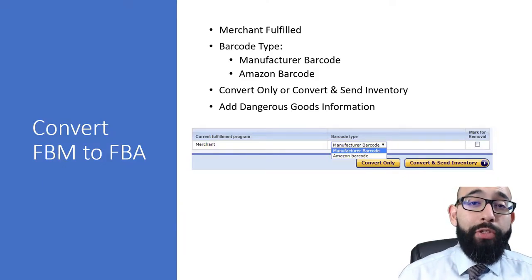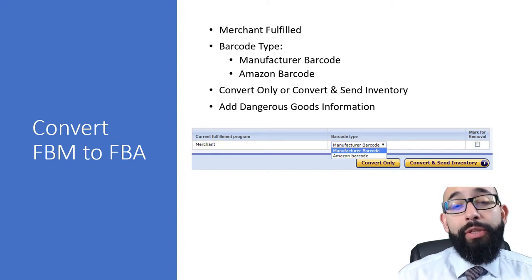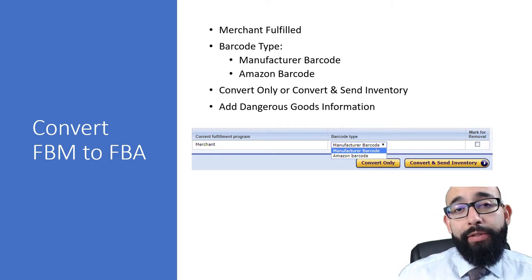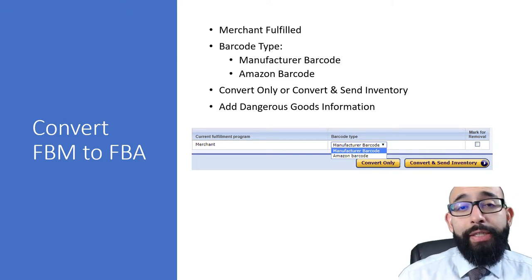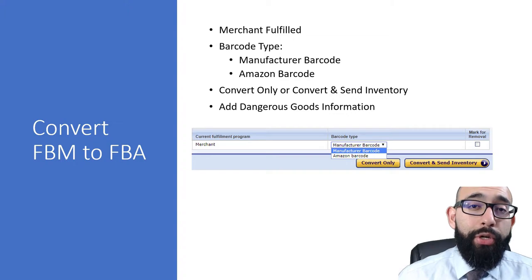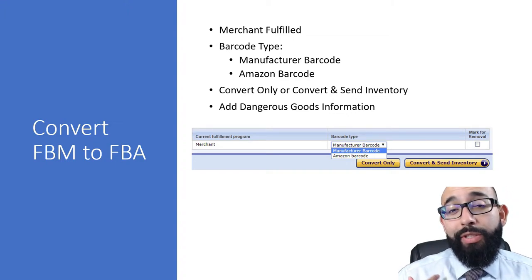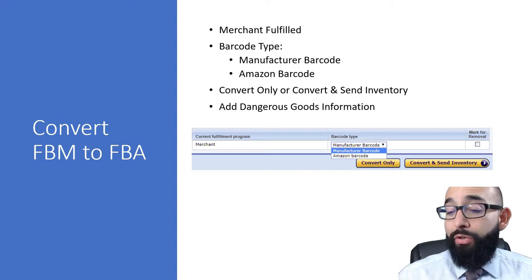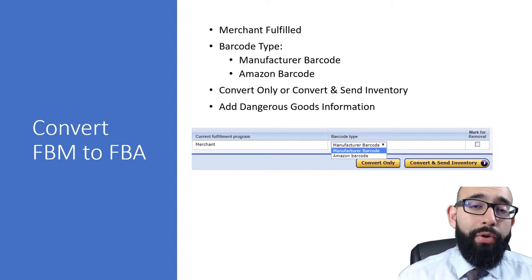Now that you've added your product to inventory, you're going to want to convert it from FBM to FBA. The easiest way is once you're in your inventory manager page, on the right side there's the Edit drop-down menu. Drop down that menu and there's one that says Convert to FBA — click on that. Then you'll have an option to select the barcode: either the manufacturer barcode or the Amazon barcode. I use the Amazon one because it's simpler. You then have two options: Convert Only, or Convert and Send Inventory. If you're doing OA and don't have the product on hand, just Convert Only.